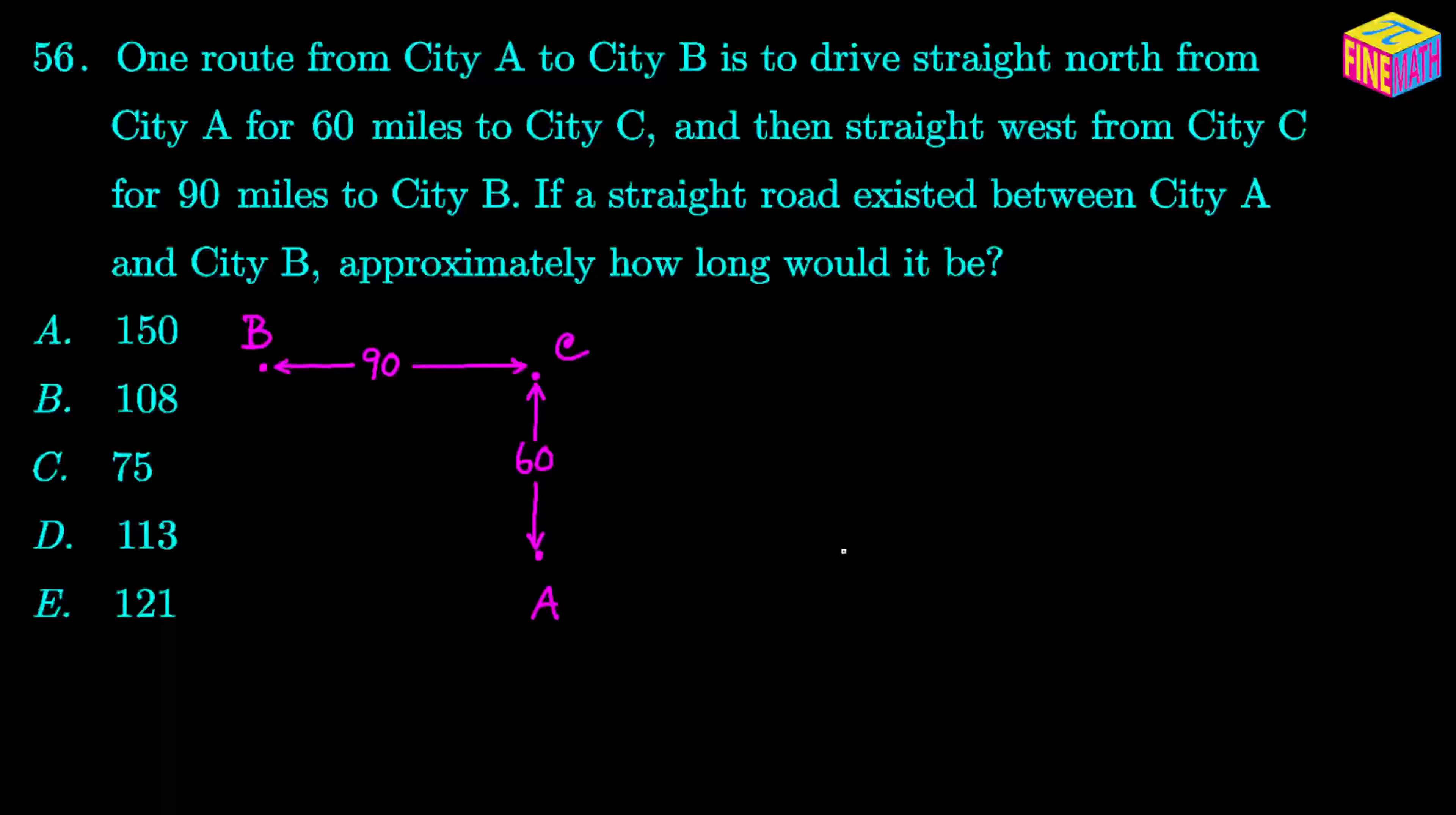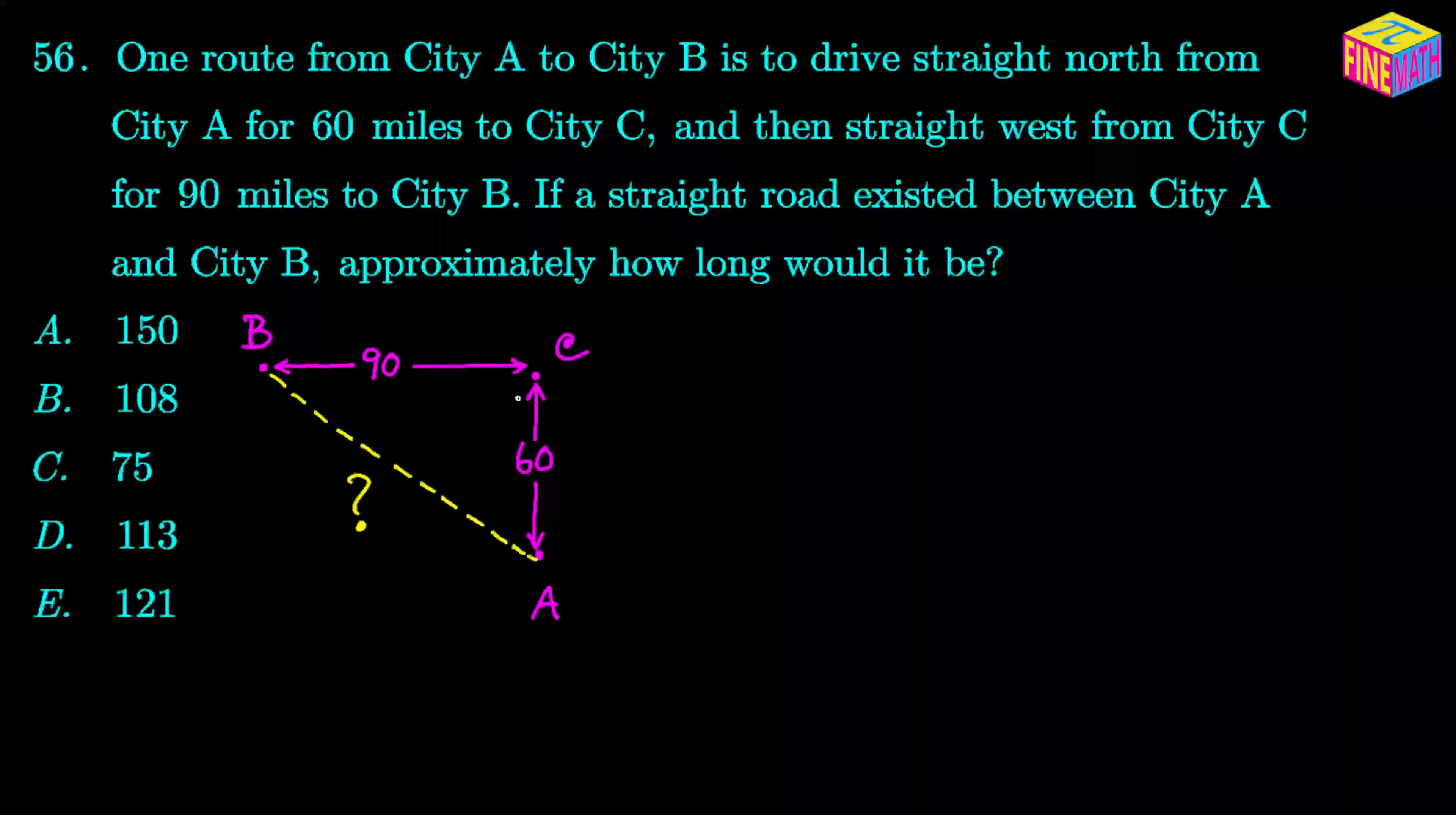So let's try to connect A and B. I'm going to use a dotted line here. Now, if you think about this shape, it looks like a right triangle. Why? Because between north and west, this angle is exactly 90 degrees. I'm just joining it like that to show this is a right angle.